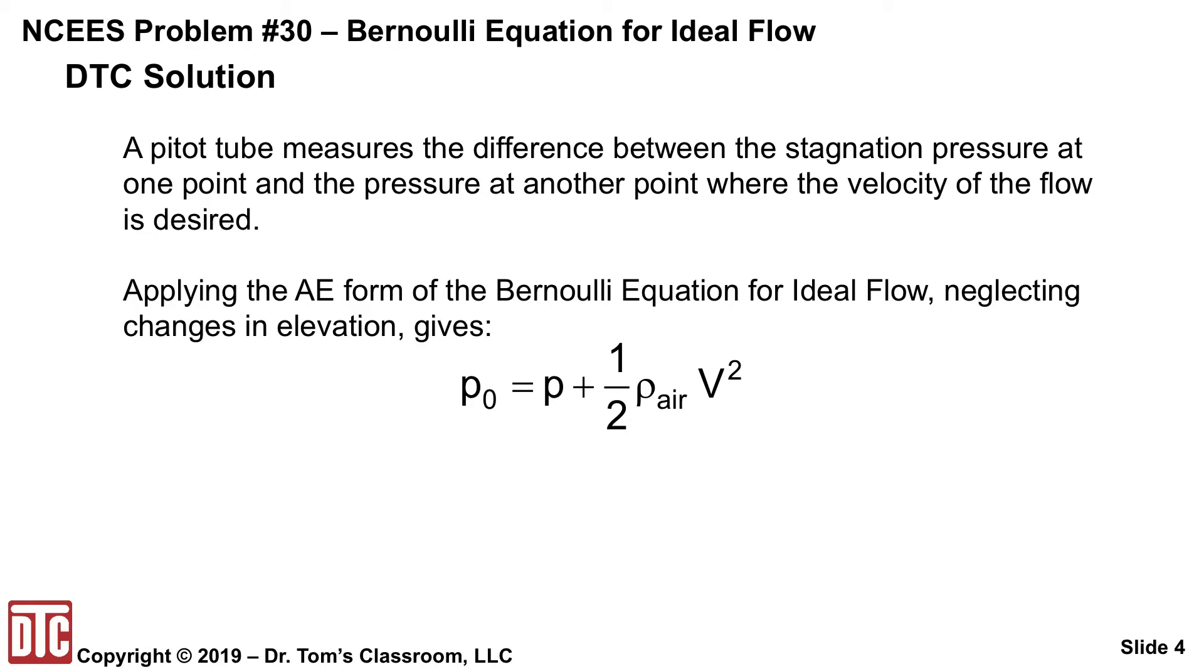We've got P0, the stagnation pressure is P plus one-half rho air, because the working fluid here is air, times V squared. But they've given you the pressure in terms of water. So if we solve for V squared, we'll get two P0 minus P over the rho of air. That is the density of air, so we'll need to make a conversion there from pounds to slugs.